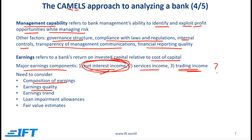This relates to earnings quality, which has to do with the sustainability of earnings. If earnings are sustainable, quality is high. If a significant component of earnings comes from non-recurring items, that implies earnings quality is low. We are also concerned with earnings trend — ideally we want a positive trend. In evaluating earnings, we should carefully look at loan impairment allowances. If loan impairment allowances have been underestimated, that is a cause for concern because as those allowances are later recognized, they will drive earnings down.